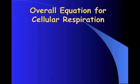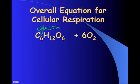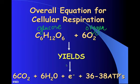The overall equation for cellular respiration is C6H12O6 (glucose) plus oxygen, which yields carbon dioxide plus water, plus 36 to 38 molecules of ATP.